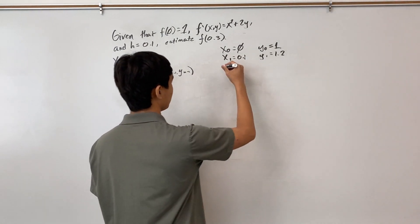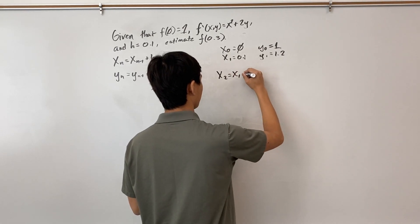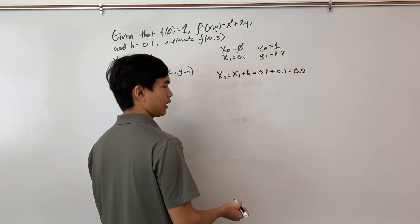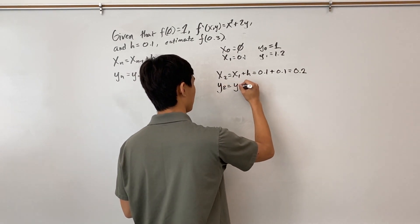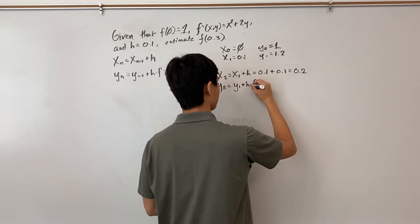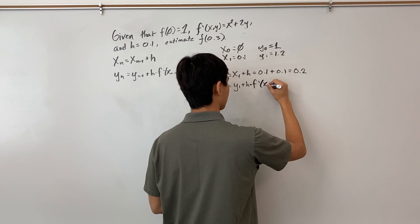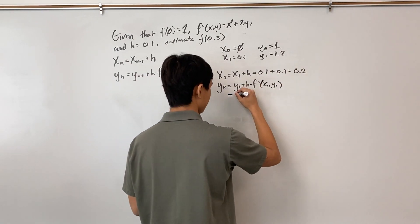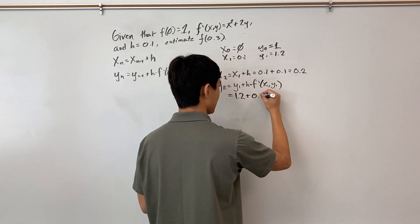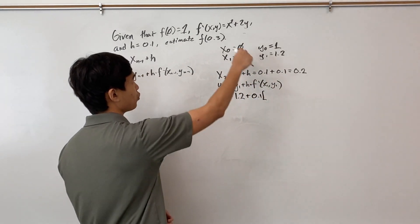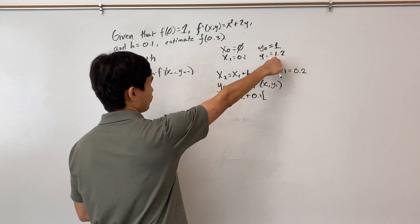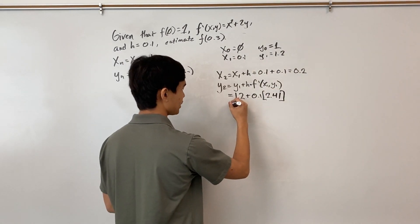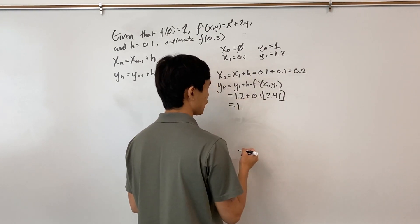Now time to find point two. So x₂ = x₁ + h, which is 0.1 + 0.1, which is 0.2. And then our y₂ = y₁ + h·f'(x₁, y₁). Like so. And when we evaluate this, y₁ we found was 1.2. And then plus our step size times, so (0.1)² is 0.01. And 2 times 1.2 is 2.4. So our slope is 2.41. And so our final answer for y₂ is 1.44.